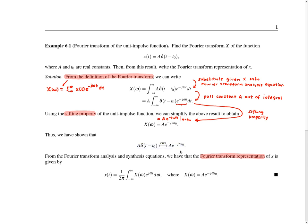Lastly in this example, we're asked to write the Fourier transform representation of x. Little x is given in terms of capital X — the Fourier transform of x — by the inverse Fourier transform equation, and the Fourier transform of x is given by the formula A·e^(−jωt₀), which is essentially what we just found.